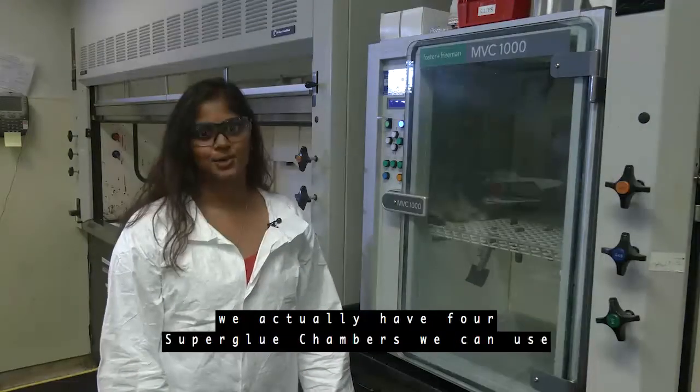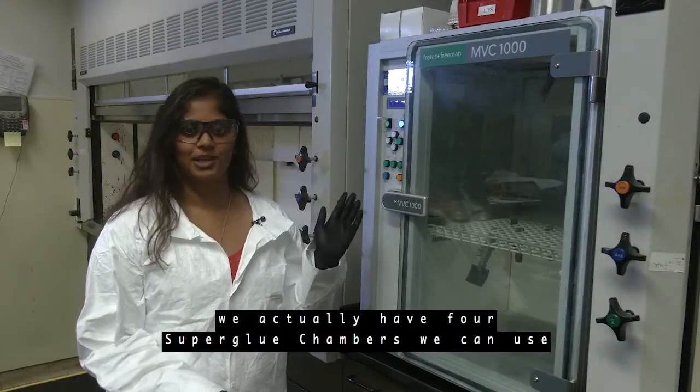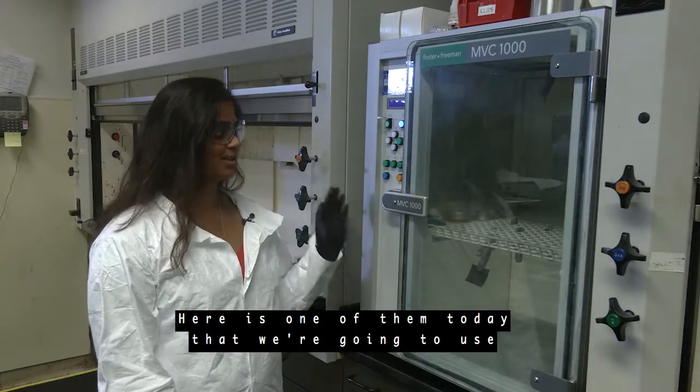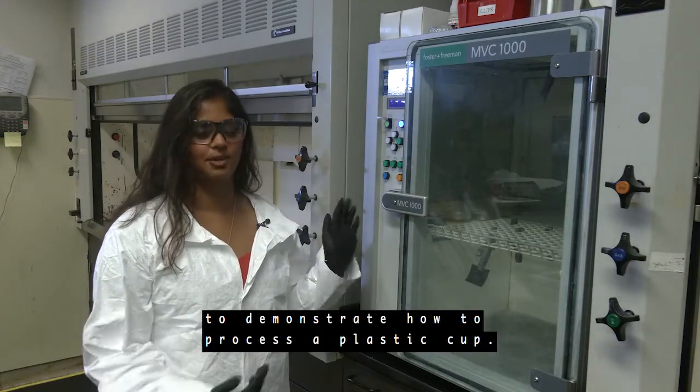Here at the Fingerprints Operations Branch we actually have four superglue chambers we can use when processing evidence. Here's one of them today that we're going to use to demonstrate how to process a plastic cup.